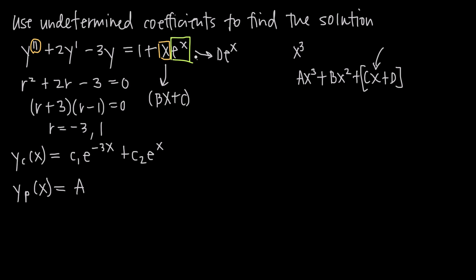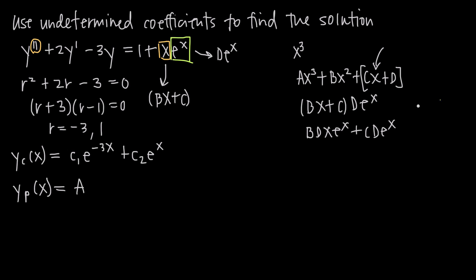You might think our guess for xe^x is just the product of (bx + c) and de^x. Distributing, we get bdxe^x + cde^x. Since bd and cd are just constants, we can rename them b and c. So our particular solution guess simplifies to y_p(x) = a + bxe^x + ce^x.